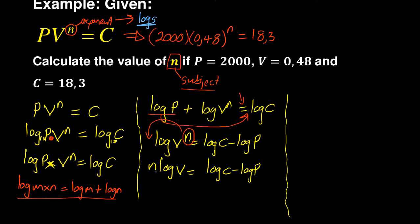Did you see how it dropped? When I've done that I can therefore divide by log V on both sides such that I can then have my n is equal to log C minus log P all over log V.